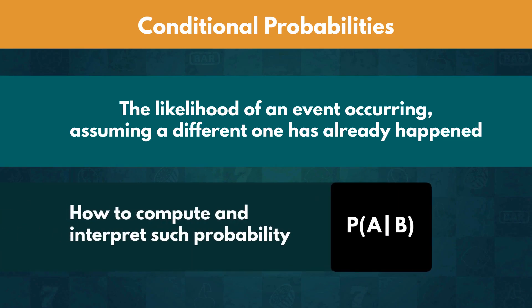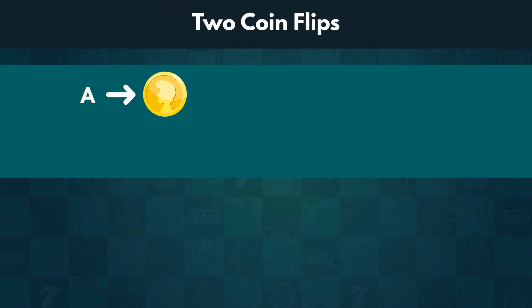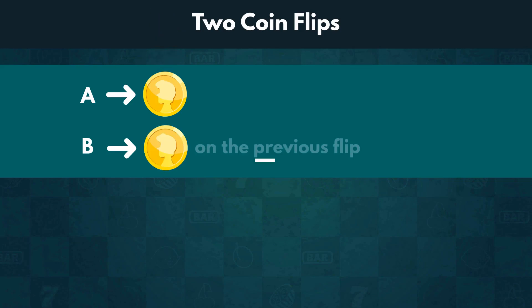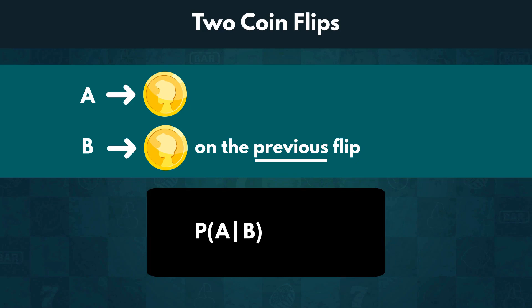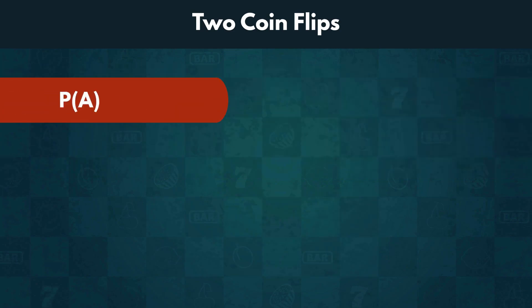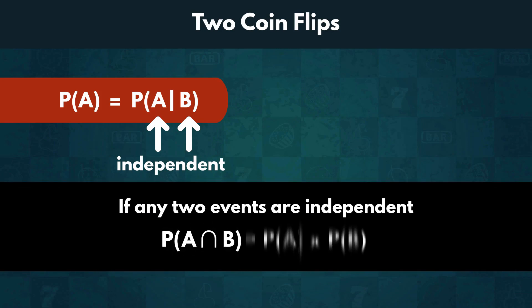Let's go back to the coin flip example from the last lecture. A represents getting heads, and B represents getting heads on the previous flip. The probability of getting heads now, after getting heads last time, is still 0.5. Therefore, P of A equals P of A given B. This is equivalent to saying the two events are independent. If any two events are independent, the probability of their intersection is the product of the individual probabilities.